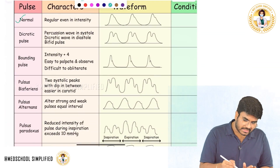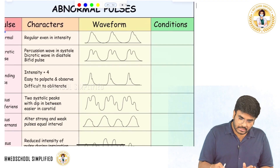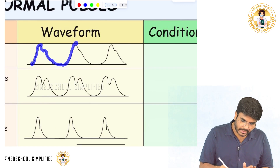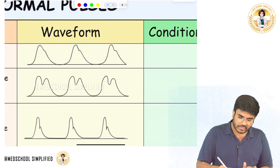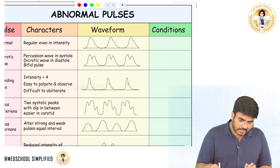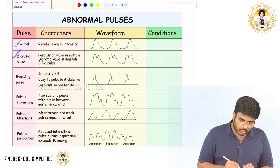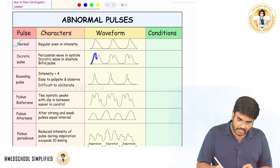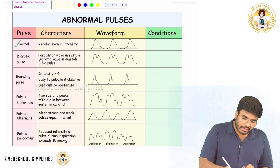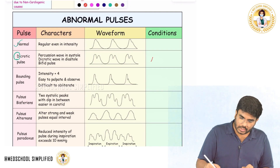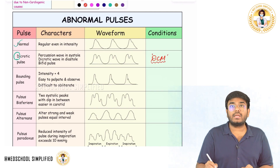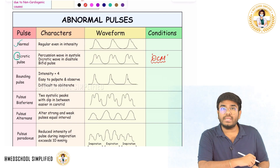Here is the normal pulse — pressure increases and decreases during diastole, with a dicrotic notch. Now there is something called a dicrotic pulse. In a dicrotic pulse, you are having two peaks. Whenever you see the word dicrotic, D for D — dicrotic pulse is seen in dilated cardiomyopathy. A person with dilated cardiomyopathy is going to have dicrotic pulses.